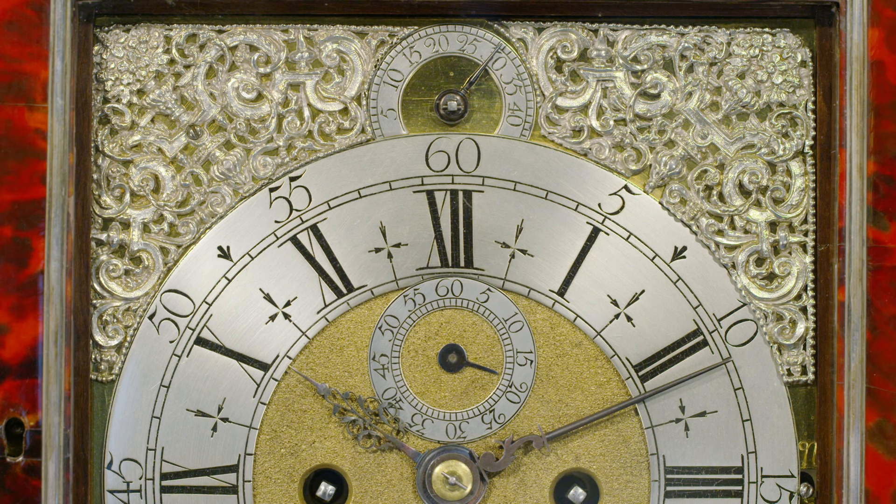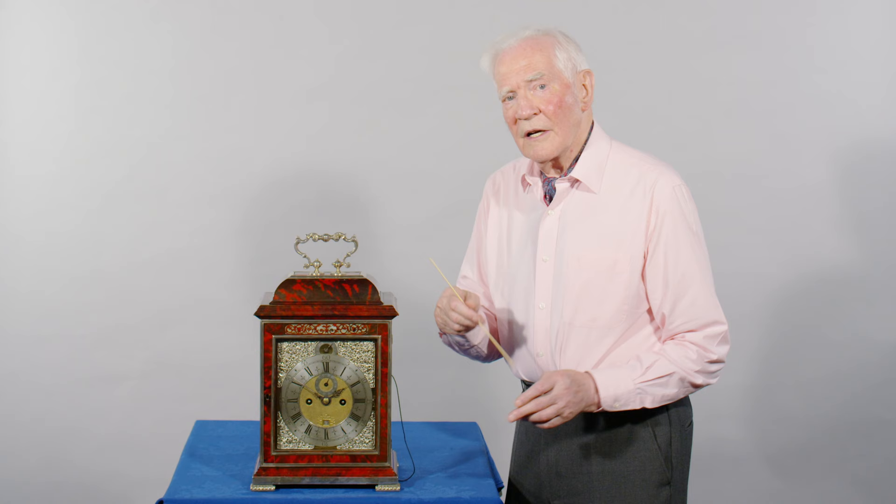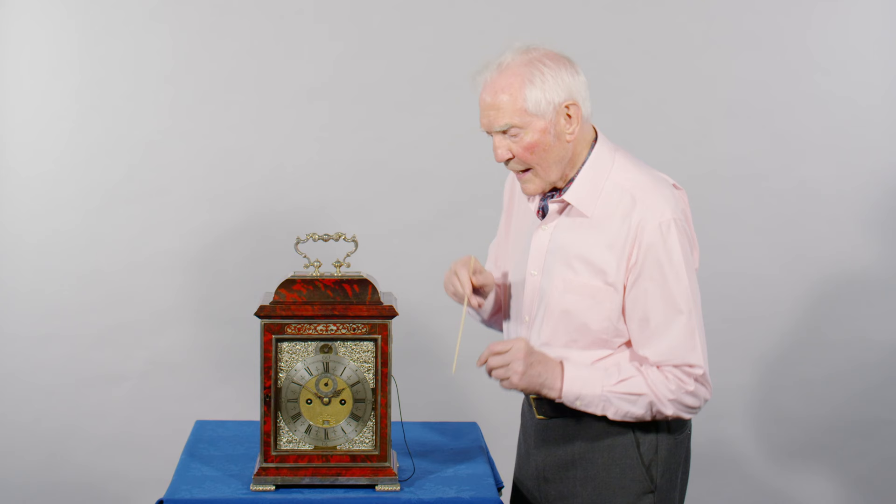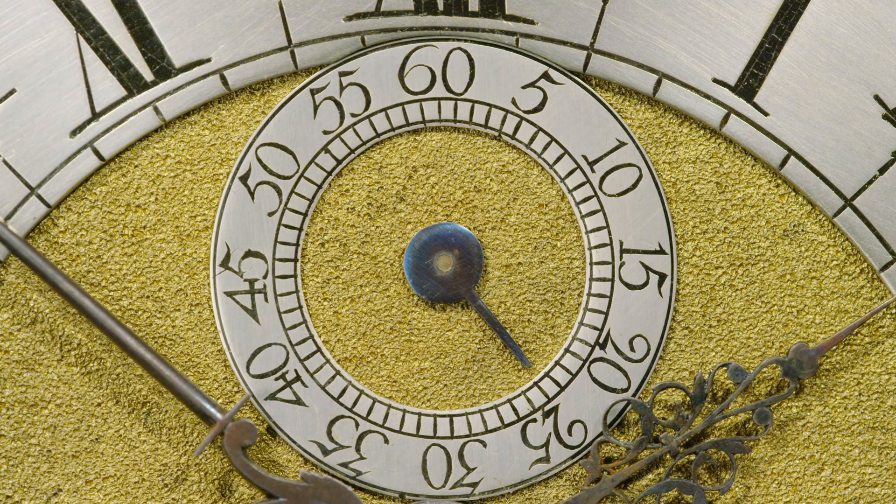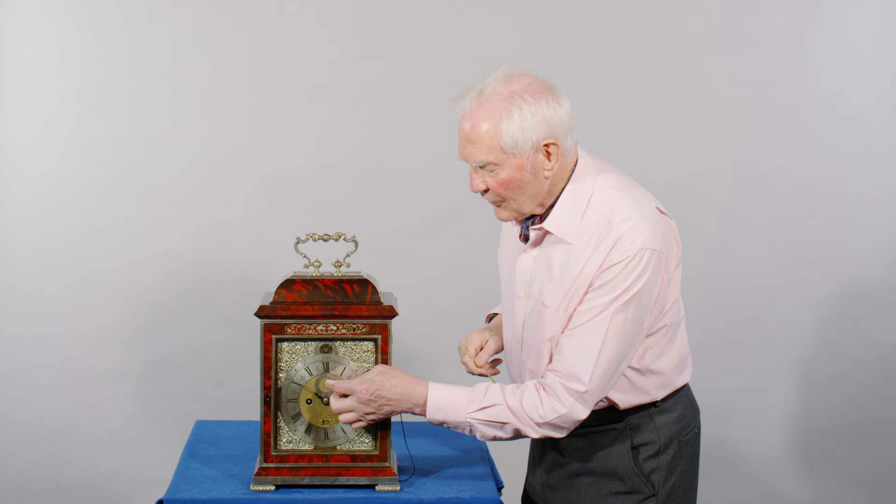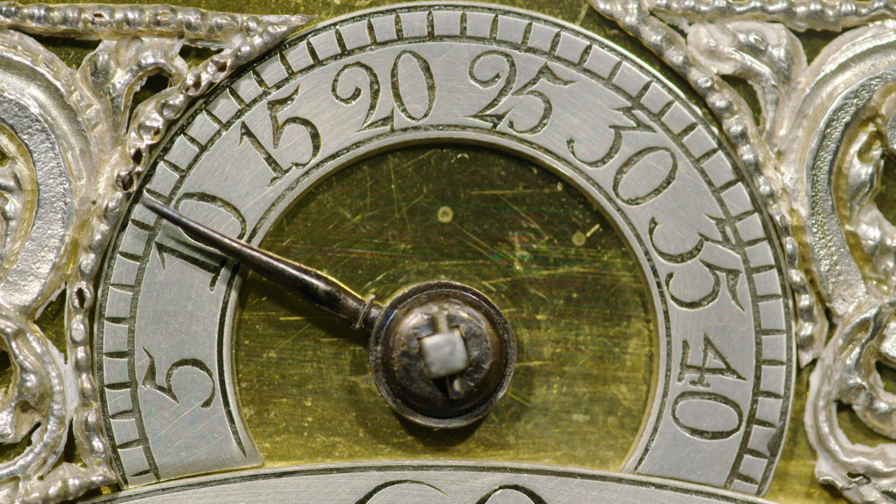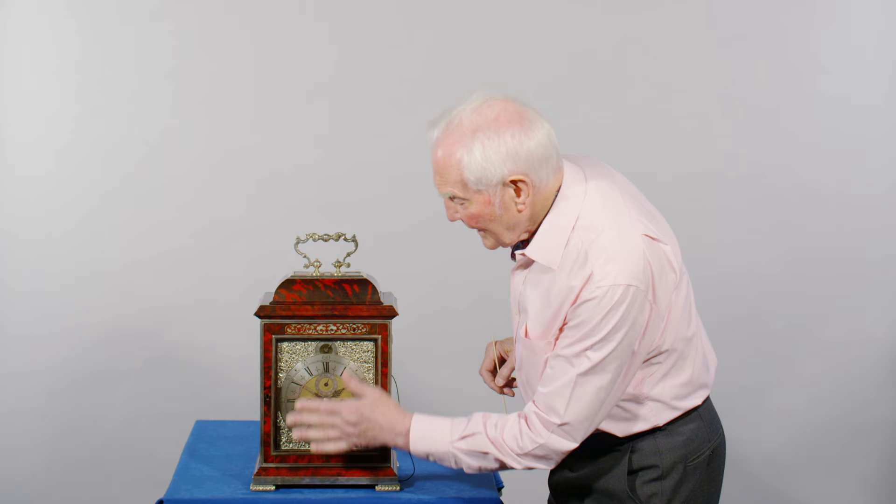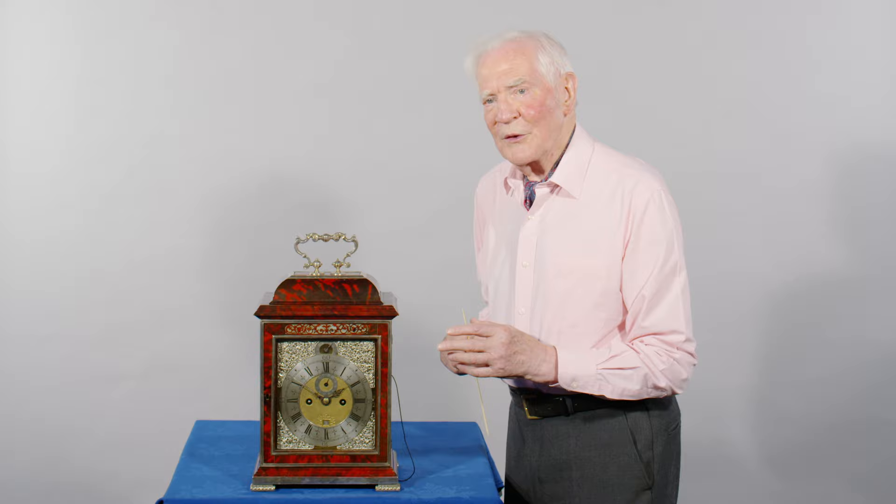It's very rare for a table clock with a short pendulum to have a seconds hand, and here you've got the seconds hand and the seconds dial counterbalanced with the adjustment dial for the regulation of the pendulum above. So the design shows the Huguenot influence of making it look attractive as well as functional.